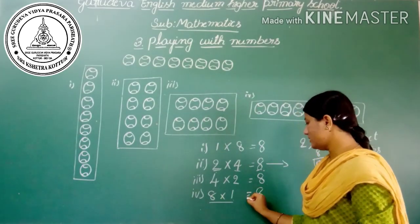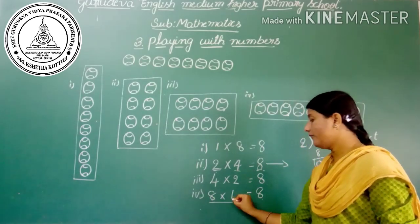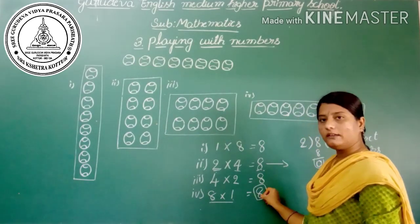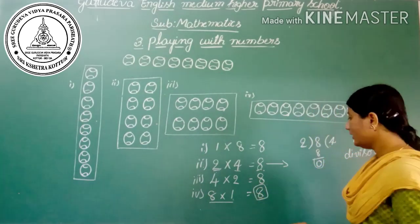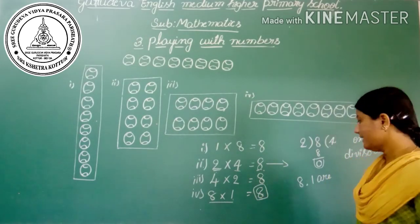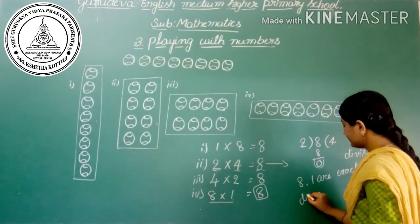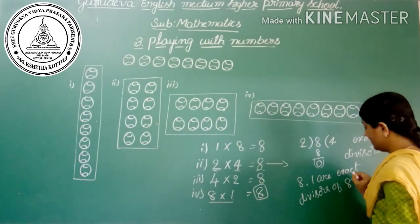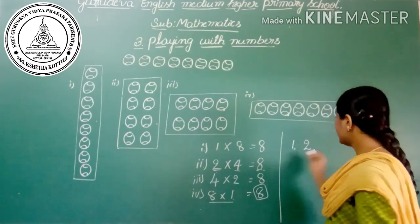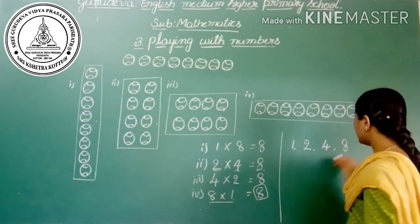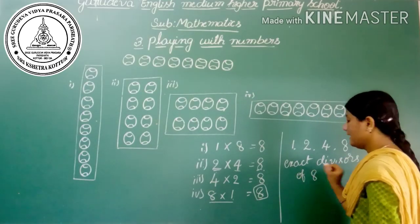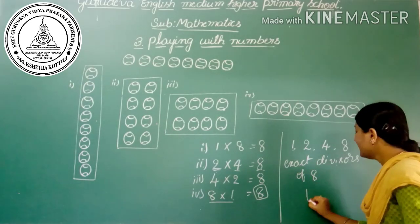Similarly, you can observe that 8 into 1 equals 8. So 8 and 1 are also exactly divisible by 8. Also, 1 is exactly divided by 8, and 2 is also exactly divided by 8. So these are the exact divisors of 8, and these are called factors of 8.